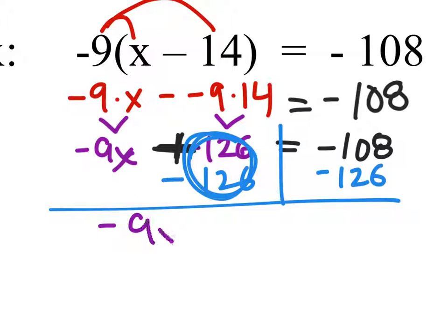And it puts that negative 9x pretty much by itself now. So when we combine negative 108 and negative 126, we get a negative 234.